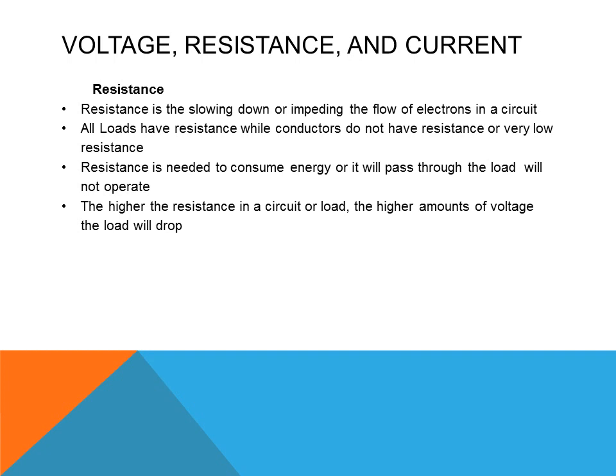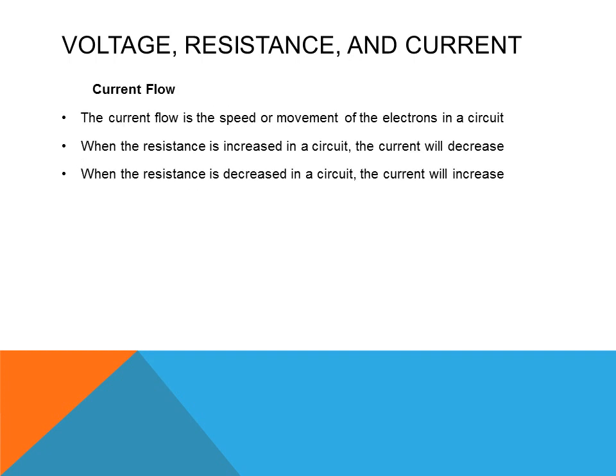Resistance is the slowing down or impeding of the flow of electrons in an electrical circuit. All loads have resistance while conductors have very low or no resistance. Resistance is needed to consume energy — without it, current will pass through the load and the load will not operate. The higher the resistance in a circuit or load, the higher the voltage drop. When resistance is increased in a circuit, current will decrease; when resistance is decreased, current will increase.